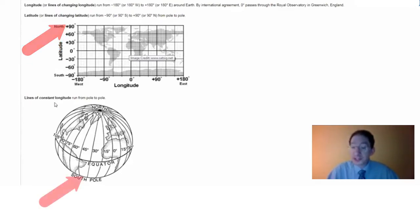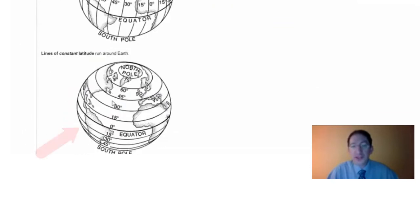Lines of constant longitude run from pole to pole because anywhere on this line, the longitude is the same, and lines of constant latitude run around the Earth because anywhere on these lines, the latitude is the same.